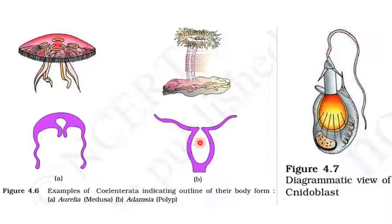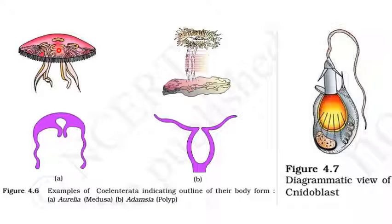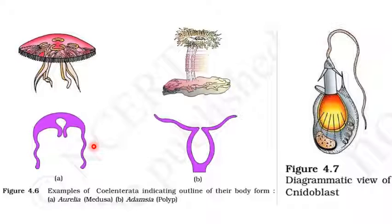In groups that show metagenesis, the polyp reproduces asexually to form a bud that becomes the medusa. The medusa detaches and swims freely in the sea water. The medusa has gonads which form gametes; the gametes fuse and give rise to the polyp. This cycle — polyp reproducing asexually to form medusa, medusa reproducing sexually to form polyp — is called alternation of generation or metagenesis.